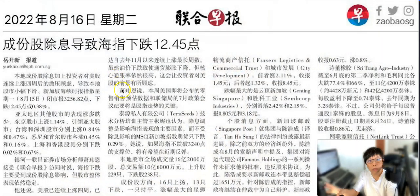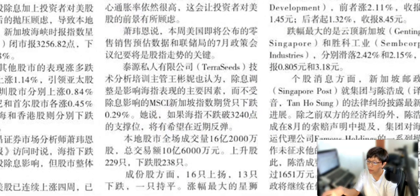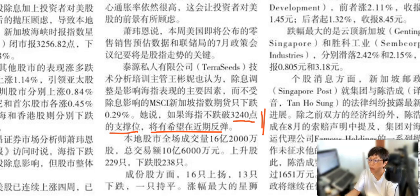So this is a newspaper I was interviewed in — I'm quite often interviewed in the newspaper. This is a Chinese newspaper in Singapore. One of the things I mentioned here is that if STI does not close below 3,240 points, which is the support at that moment, then there might be a short-term rebound. The question is: how do I come up with 3,240? And why is it that in an analyst report, you don't really see things like 3,244, but instead you see round numbers?